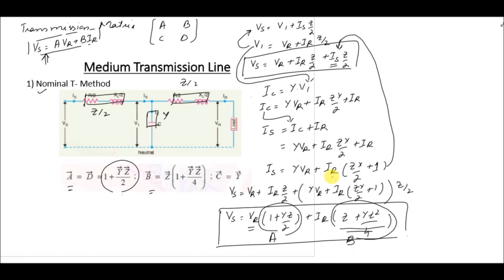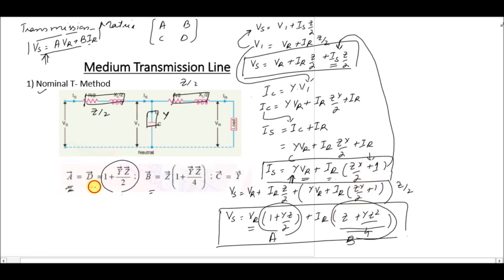For the sending-end current Is, we already have the equation in terms of Vr and Ir. So C equals Y and D equals 1 + ZY/2. These are the ABCD constants representing the nominal T method for modeling of a medium transmission line.